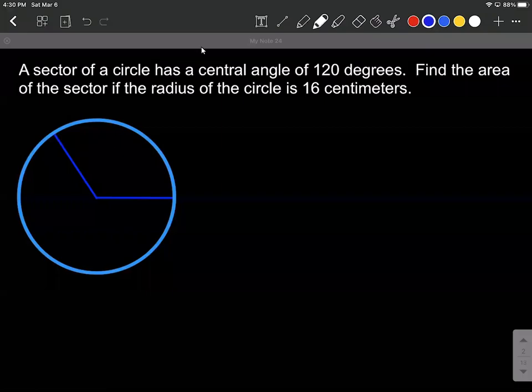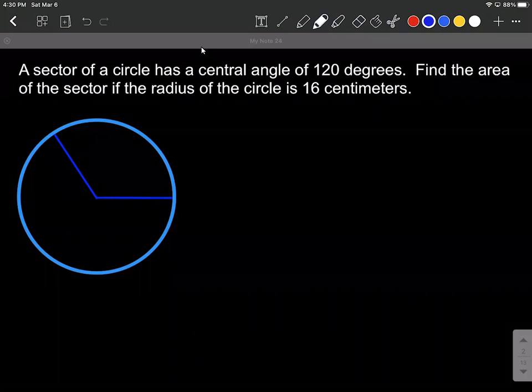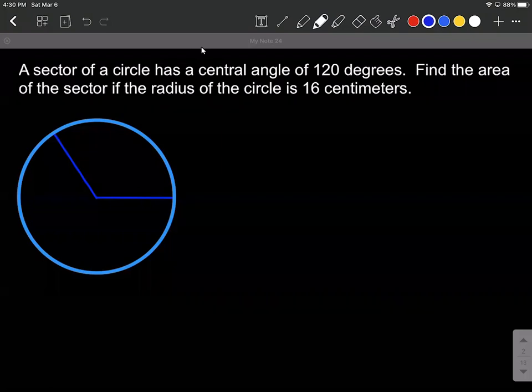On this example, we're given that a sector of a circle has a central angle of 120 degrees, and we're asked to find the area of the sector if the radius of the circle is 16 centimeters.